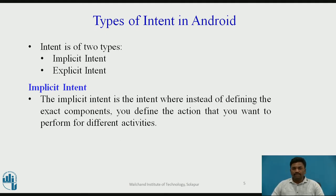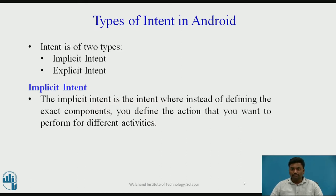What is implicit intent? Implicit intent is an intent where instead of defining the exact component, you define the action that you want. There are many inbuilt functions you can call — for example, making a call, downloading something, or browsing your contact list. These are all types of implicit intent. When a phone call comes and you switch from one activity to another, these things happen with the help of implicit intent.